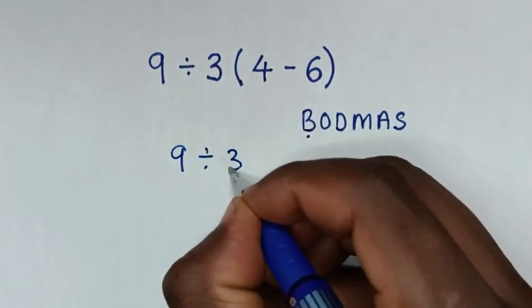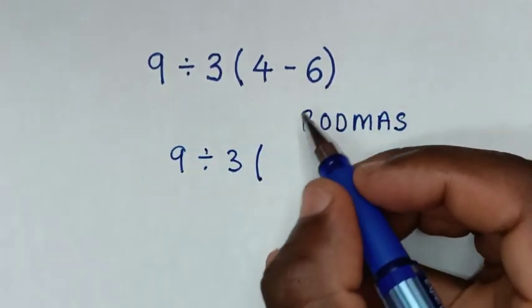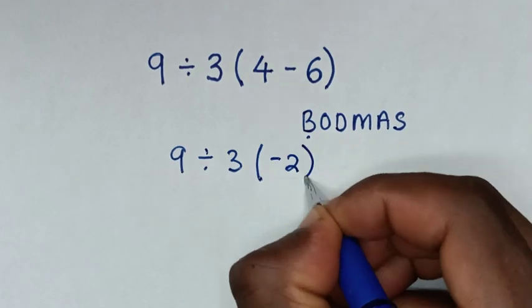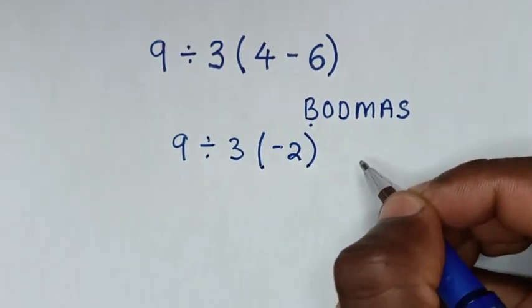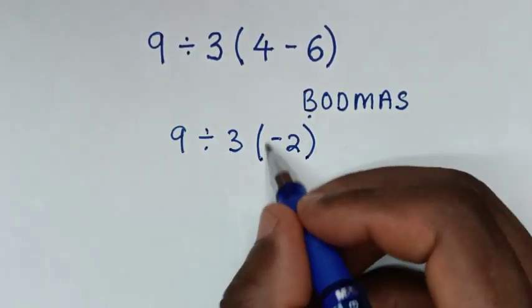So now we have 9 divided by 3, then bracket negative 2 bracket. Between the 3 and negative 2, we have a multiplication sign.